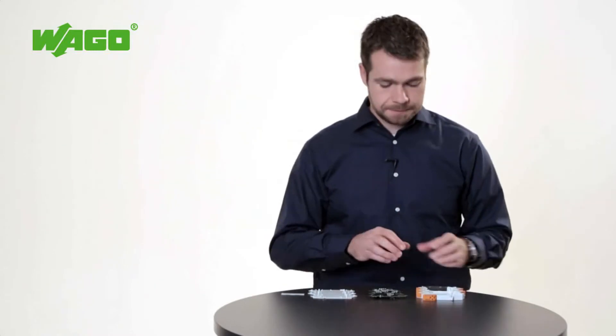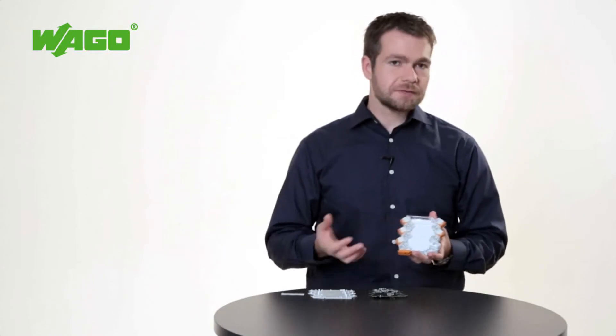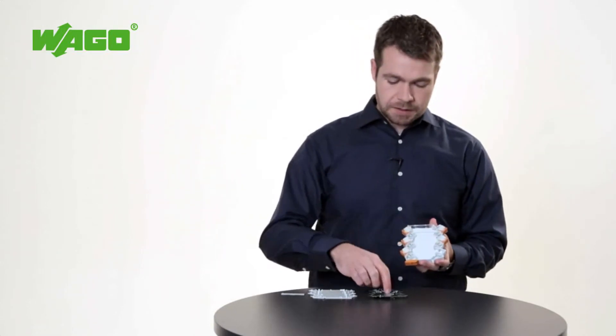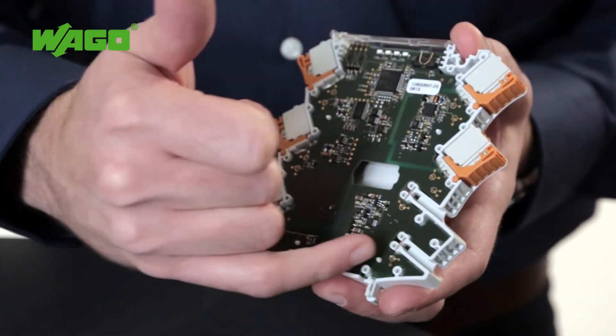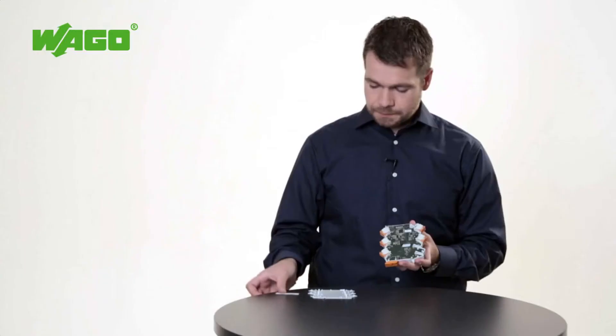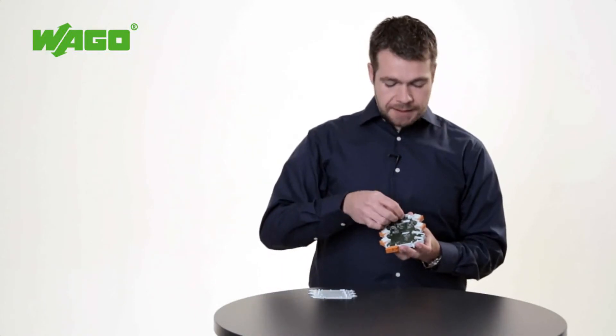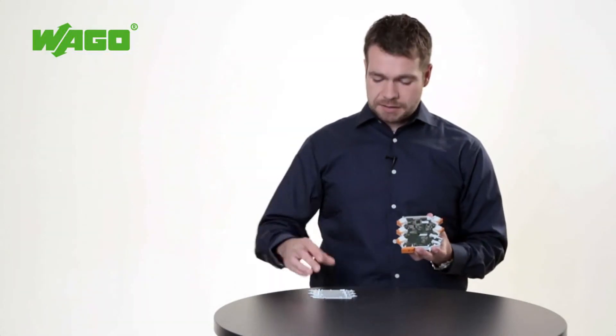I'd like to show you how easy it is to integrate your solution into our housing. You only need to order one housing in the size you require, including your personally selected connection options. You place your circuit board into our housing and then solder it at the appropriate points. The optional cover plate can also be integrated into the housing.